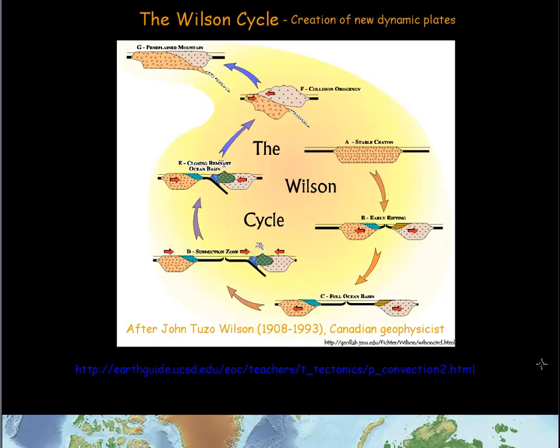Hello, what I'm going to try to do today is go over something called the Wilson Cycle. This was an idea of the way the earth created new crust and new oceans by John Tuzo Wilson back in the 1980s. He was a Canadian geophysicist - you can see he's no longer with us, but we still call it after him the Wilson Cycle.